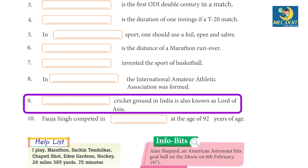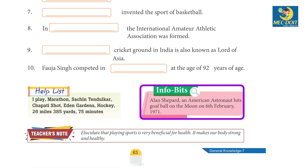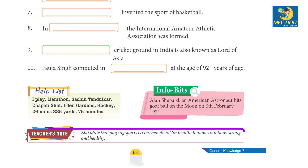8. In 1912, the International Amateur Athletic Association was formed. 9. Eden Gardens cricket ground in India is also known as the Lord of Asia. 10. Fauja Singh competed in a marathon at the age of 92. Fun fact: Alan Shepard, an American astronaut, hit a golf ball on the moon on 6th February 1971.